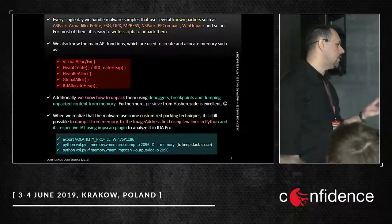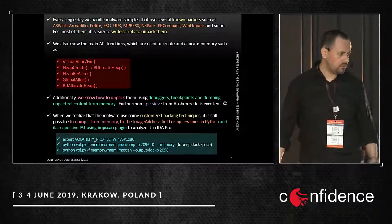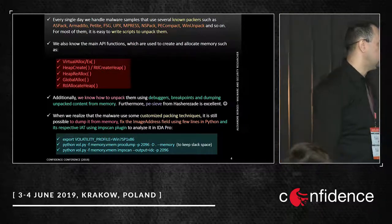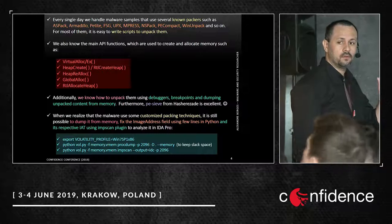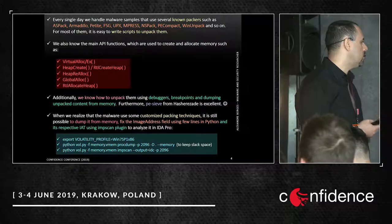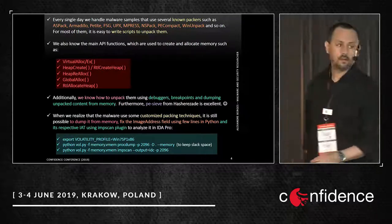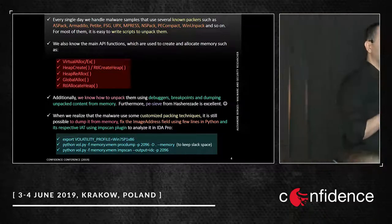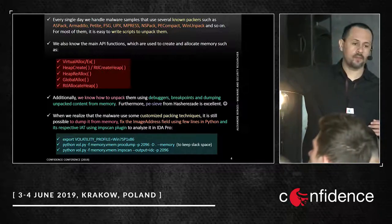Almost everyone knows how to do that. Additionally, we can use other different tools. For example, PCHunter — it's a very nice tool to dump unpacked binaries and inject code from memory automatically. It's a tool that makes your life easier. We can also use, for example, Volatility. You can dump a binary unpacked in memory using some easy plugins, for example procdump.